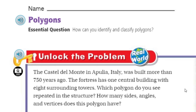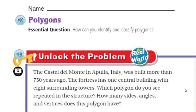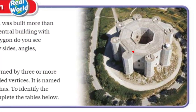We can't do anything until we unlock the problem — that's right, because it's real world. It says the Castel del Monte in Apulia, Italy was built more than 750 years ago. The fortress has one central building with eight surrounding towers. Which polygon do you see repeated in the structure? How many sides, angles, and vertices does this polygon have? I see one, two, three, four, five, six, seven, eight — I see eight sides.